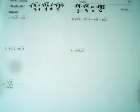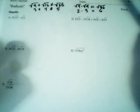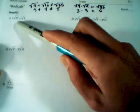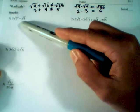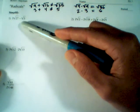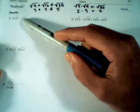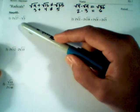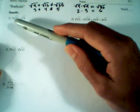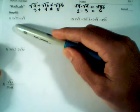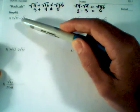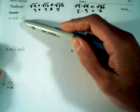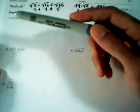In number one, we notice that the operation is subtraction between these two radicals. We are not ready to combine these because we don't have like radicals. If we had 3 root 3 and 1 root 3, that would be okay, or root 27 and root 27. But here we have to simplify them each first.